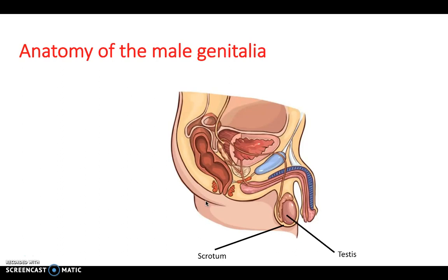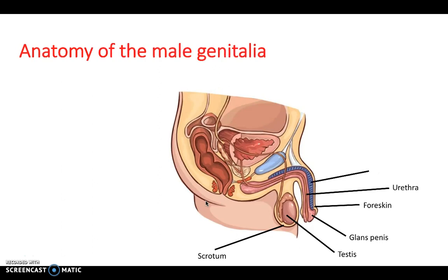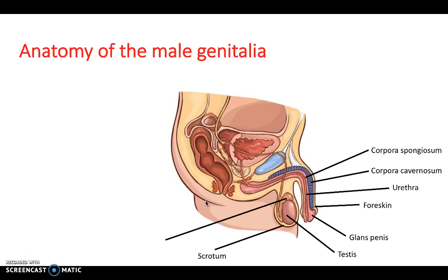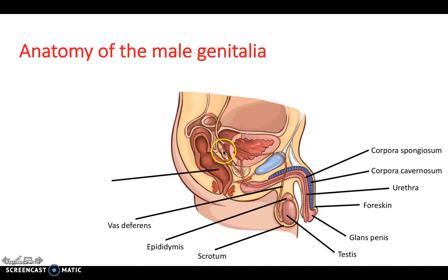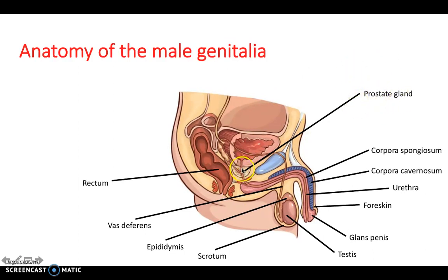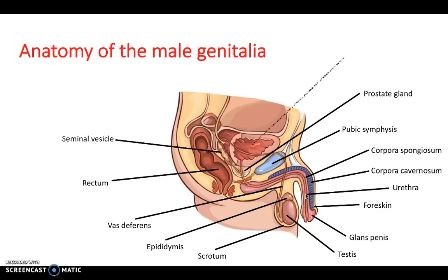The scrotum contains the testes. The glans penis is visible, with the foreskin or prepuce anatomically. The urethra runs through the penis alongside the corpora cavernosa and corpus spongiosum. On top of the testis is the epididymis, and from there the vas deferens runs up, passing through the prostate and seminal vesicle, continuing on a common pathway with the urethra. The prostate gland can swell and compress the urethra, causing difficulty with urination. The bladder sits at the top with the urethra running from it.